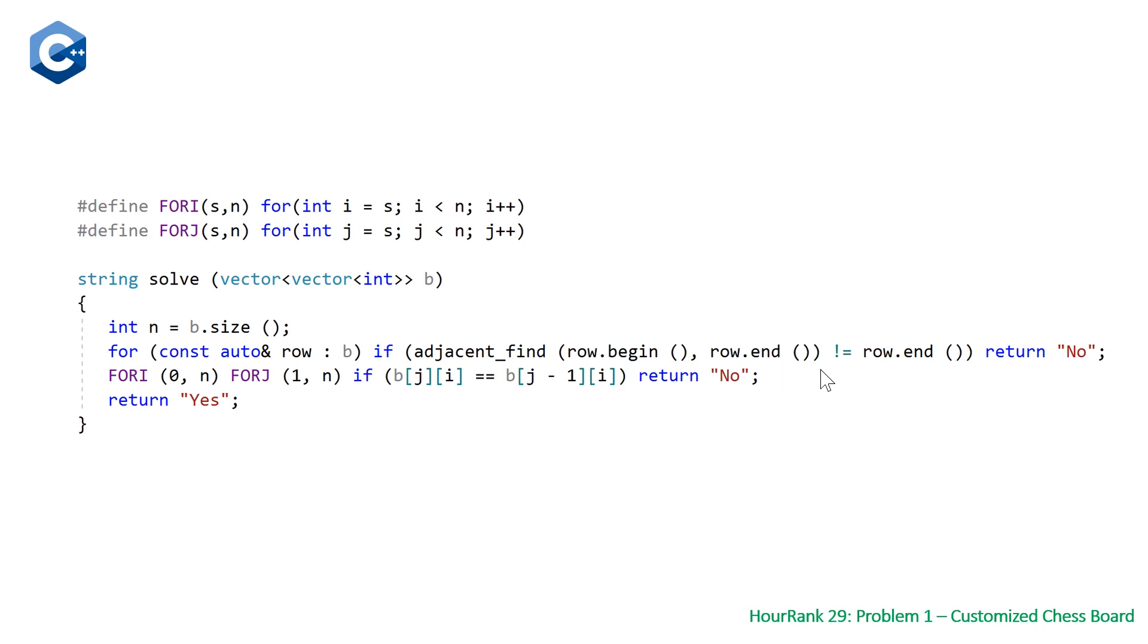So we know that if it doesn't return this, then it's found two that are equal and adjacent. So return no.